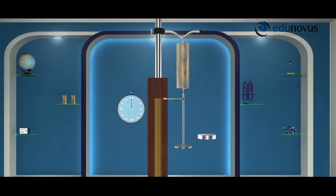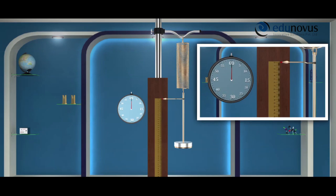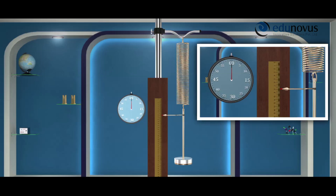Now we suspend 50 grams of weight at the lower end of the spring. Wait until the pointer comes to rest and note down its reading. Here it is 8 centimeters. Note it down in the observation table.